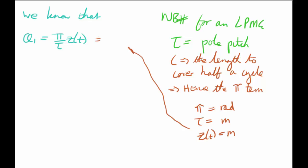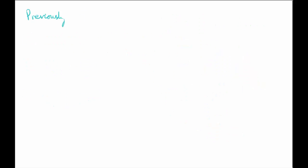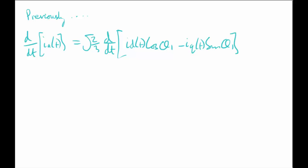So 180 degrees. That's why you have the pi divided by that tau value, because it's just a kind of a scaling factor. So you have pi is equal to radians, tau has got the units of meters, and z of t obviously has meters because it's a displacement. So let's just do a random check here. You got radians. Perfect.